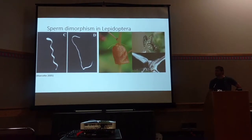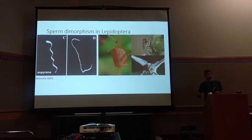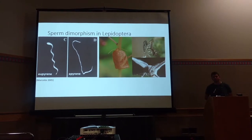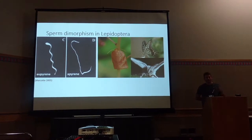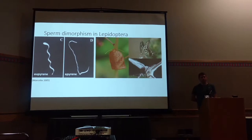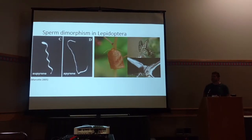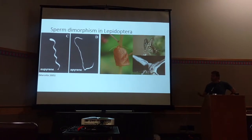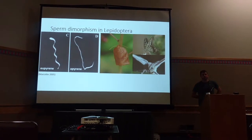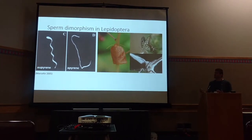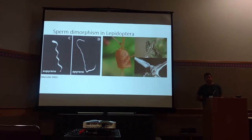They produce two types of sperm: what we might think of as normal fertilizing sperm, or eupyrene sperm, and a second anucleated sperm, also called apyrene sperm. It lacks any nuclear DNA, so obviously it can't fertilize eggs, but it's produced under strict hormone control, and males transfer 10 or 20 times as much of this anucleated sperm as nucleated sperm when they mate with females. So it pretty clearly has some role in reproduction, although what that is isn't really clear, and my dissertation focuses on trying to understand the dimorphism and what the role of anucleated sperm might be.